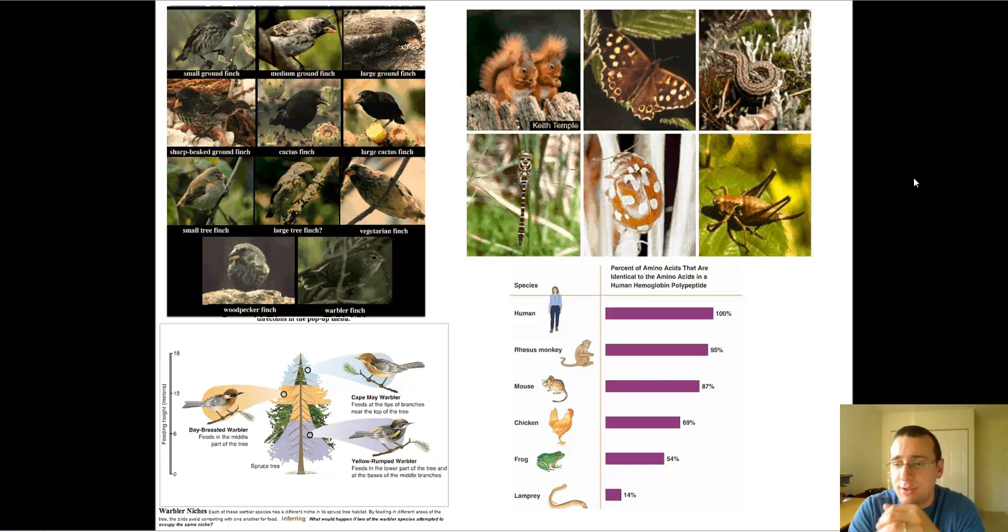Another suggested way to separate the species was the idea of the niche test. And remember how different species might have different niches. For example, the Cape May warbler feeds at the tips of the branches near the top of trees, and because of that, it has a different niche from the Bay-breasted warbler, which lives almost in the same environment, but it fits in the middle part of the tree.